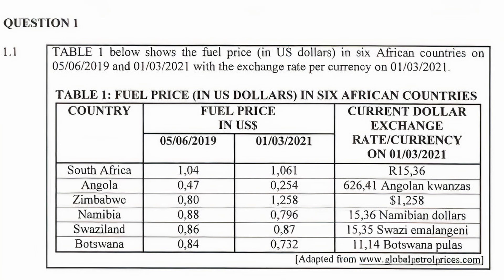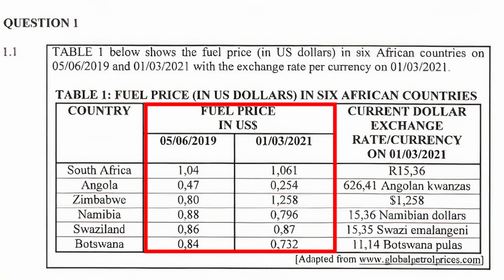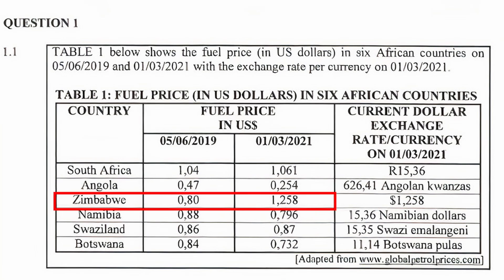Analyzing the information in the table, the first column has a list of the six African countries that took part in the study. The second column is divided into two sub-columns that show the fuel price in US dollars for 2019 and 2021 — I'll refer to these as column 2A and 2B from now on.